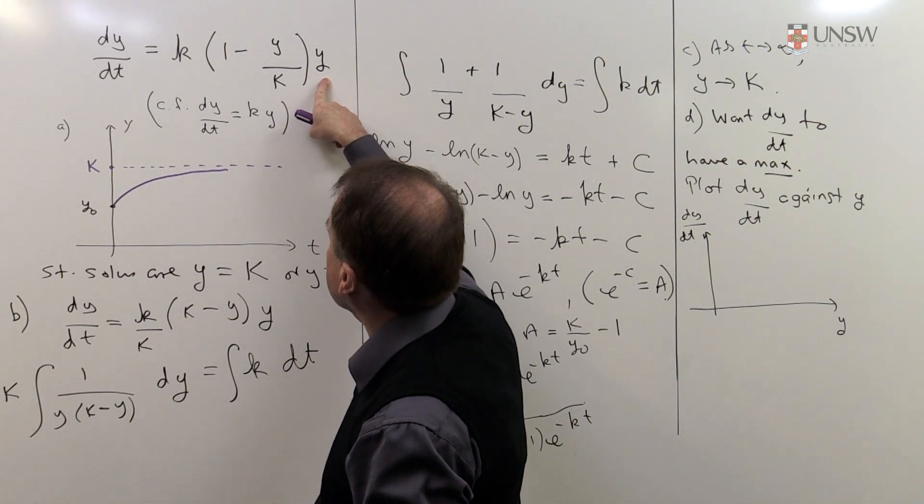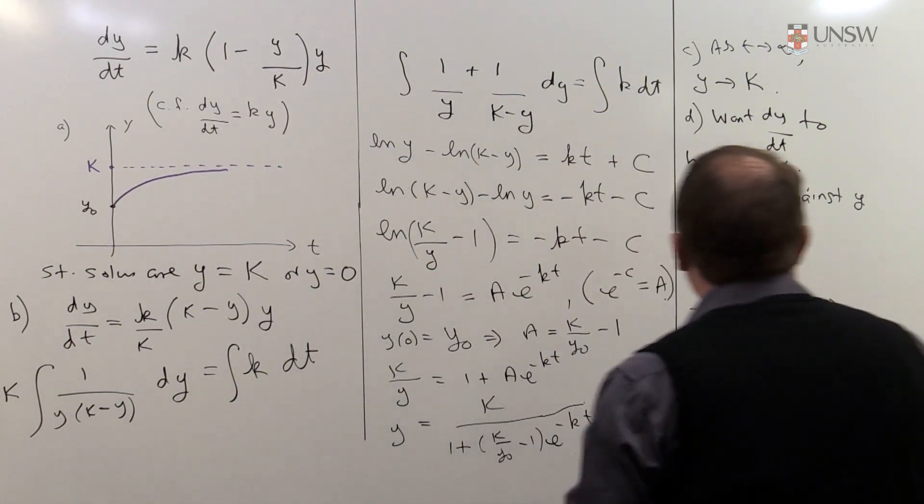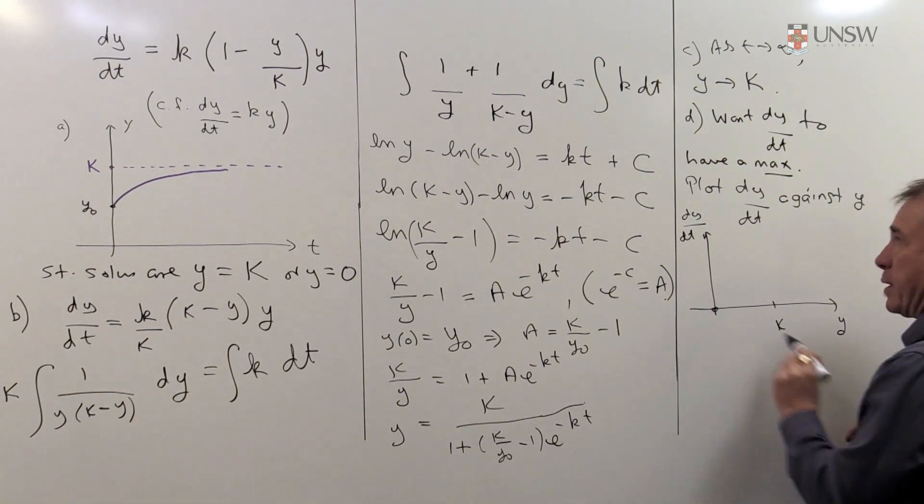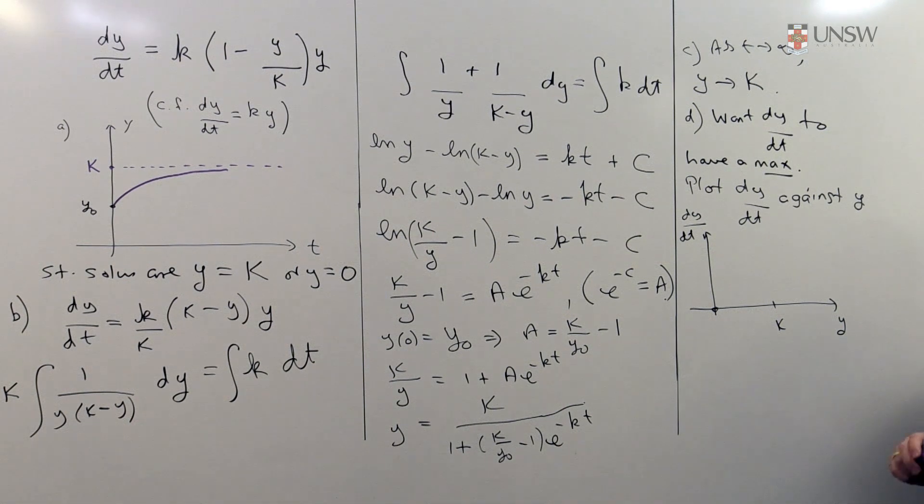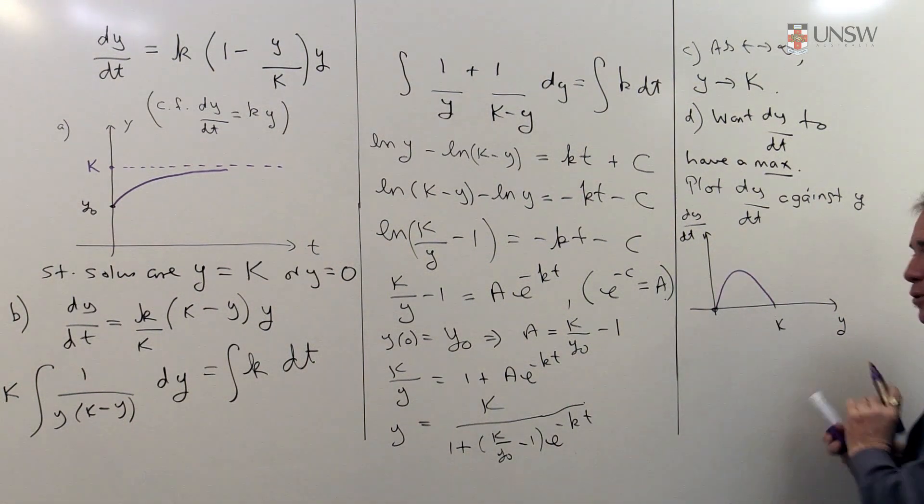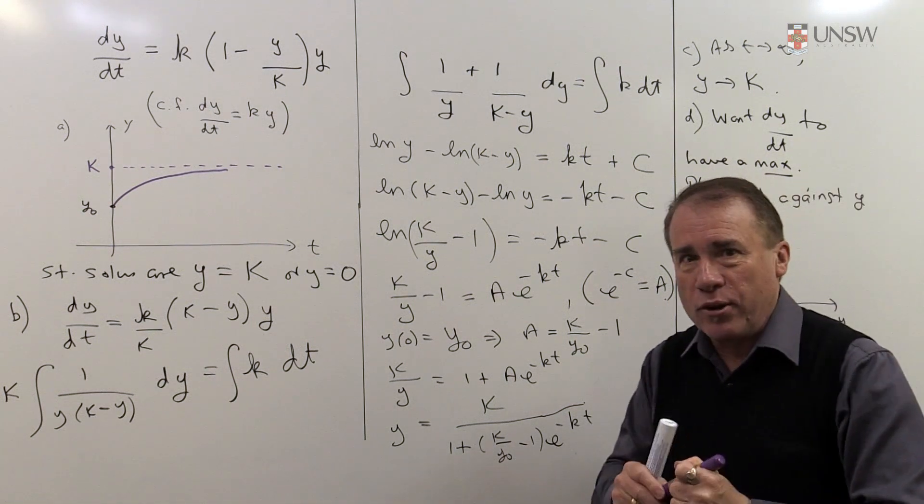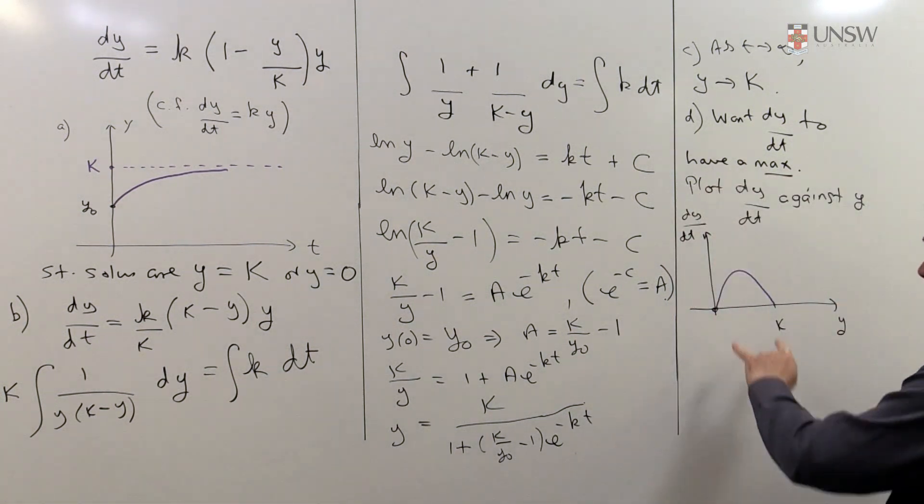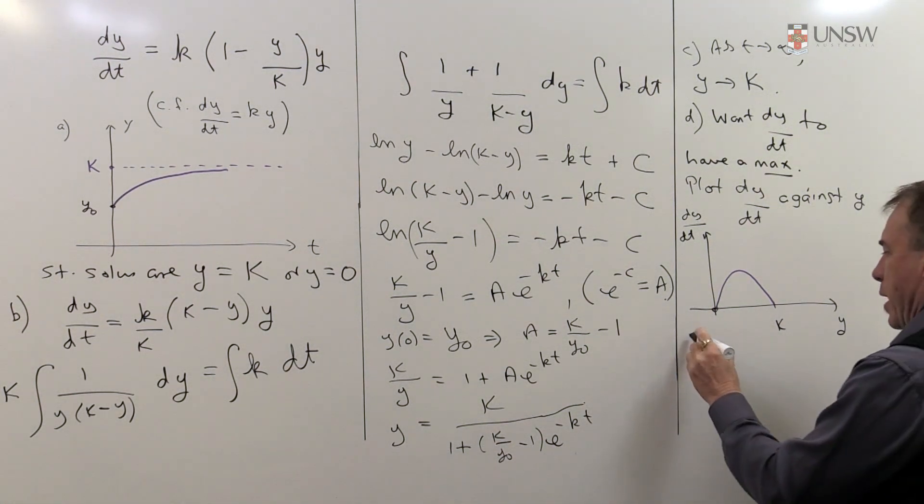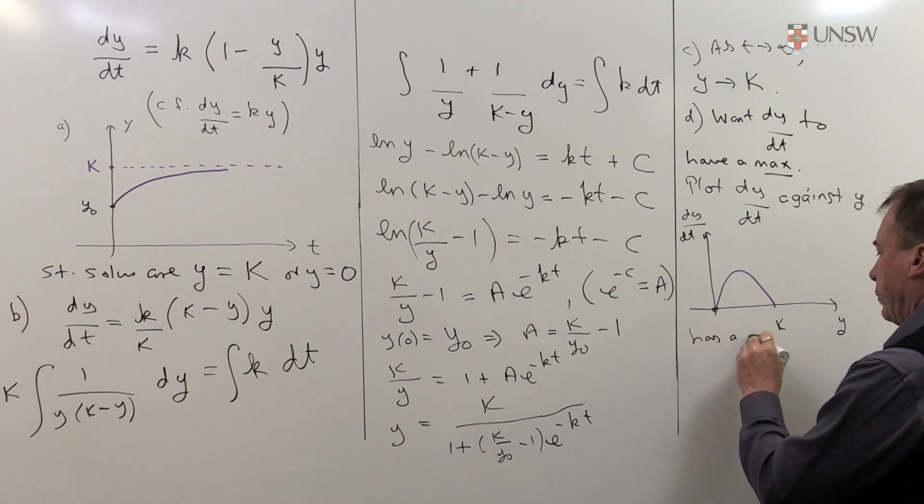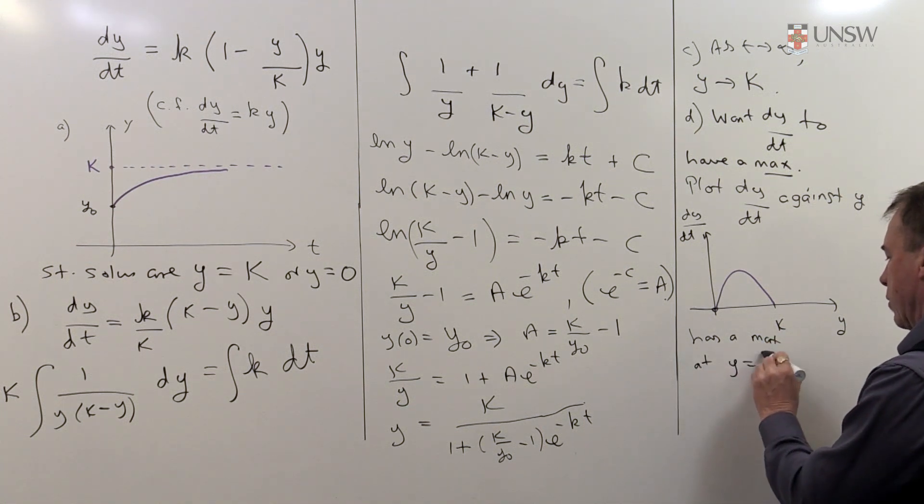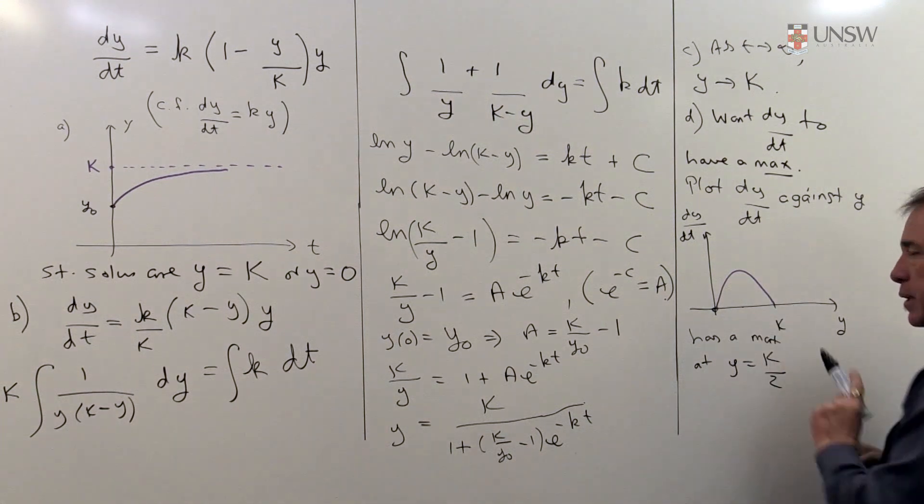just a quadratic upside down, and you know that quadratics take their maximum at the average of the roots, so that's nice and easy. So this has a maximum when y is equal to k over 2 in the middle.